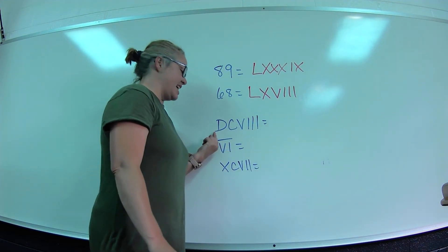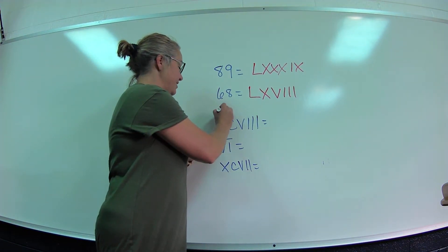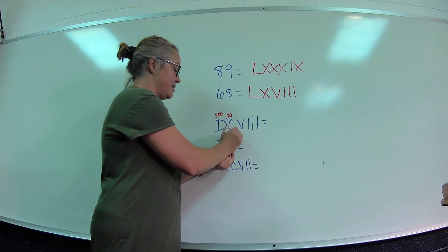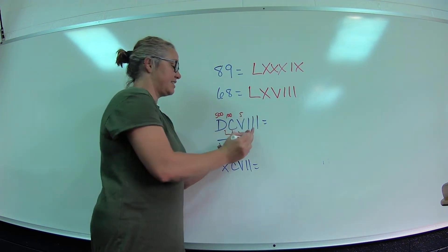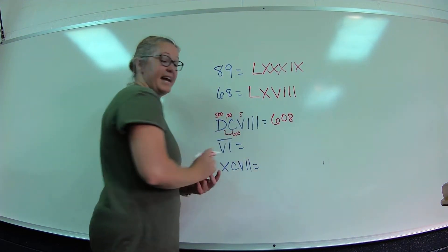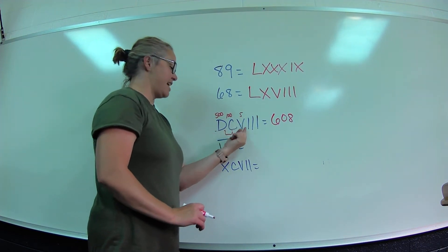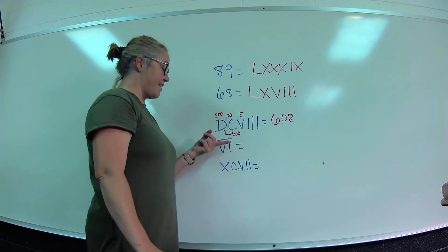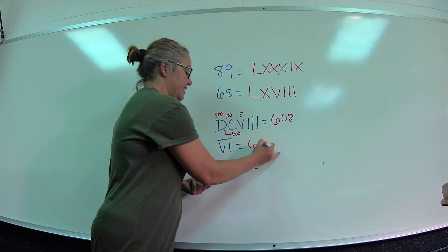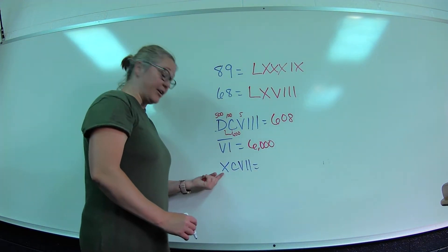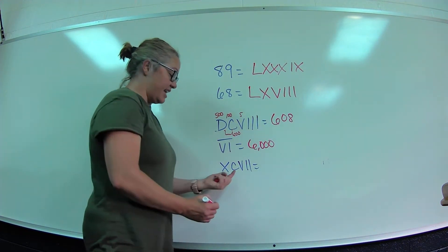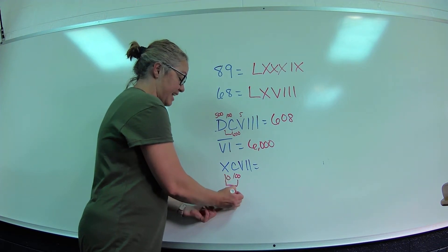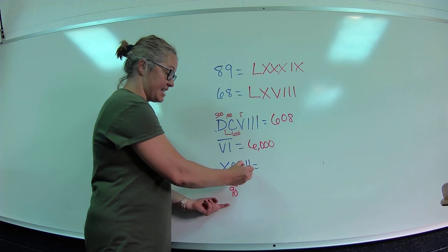Now we have Roman numerals to convert back to Arabic numbers. D stands for 500. I like to write what each letter means above it — C is 100, so far I'm at 600. Then I have 5, 6, 7, 8 — so 608. Now if there's a line over a numeral, that line multiplies it by 1,000, so V̄I equals 6,000. For XC: X is 10 and C is 100, but the lesser unit is in front of the larger unit, so I subtract — that gives 90. Then 95, 96, 97.